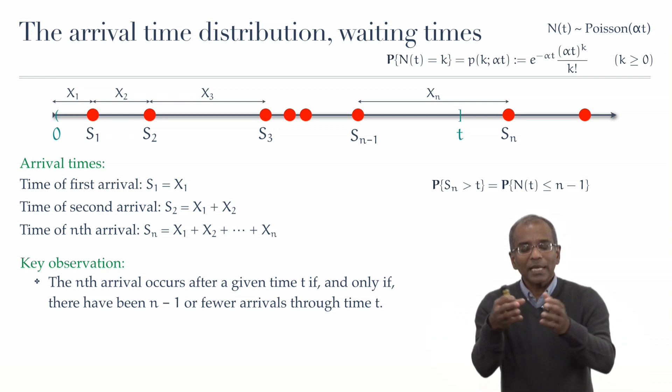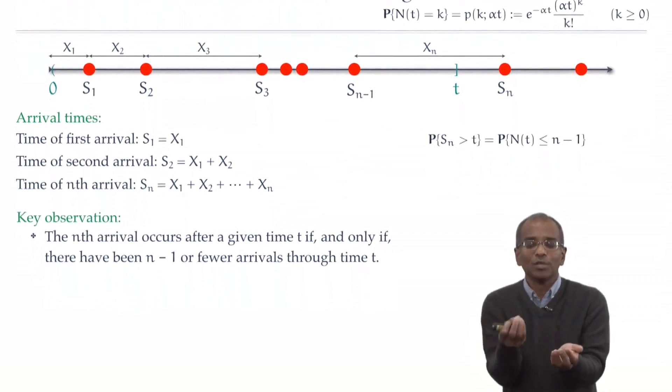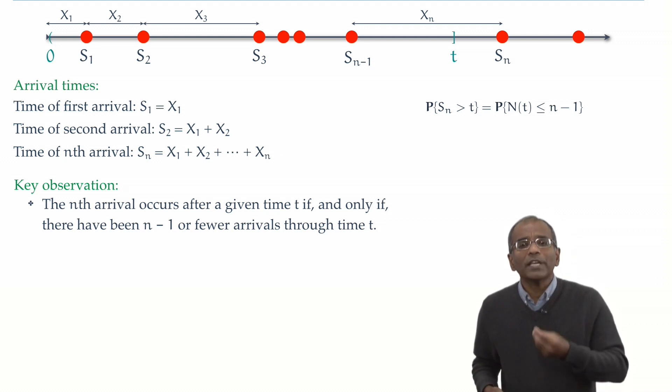Of course, this then corresponds to a collection of integer values for the number of arrivals, and the collection is 0, 1, 2, up till n-1. The probability of that collection by additivity is the sum of the individual atomic probabilities.